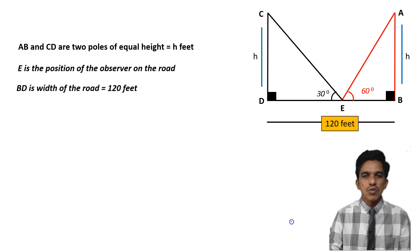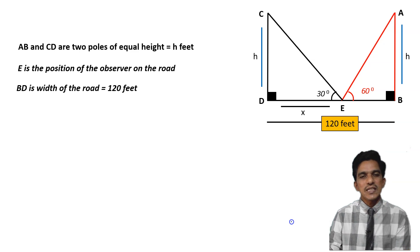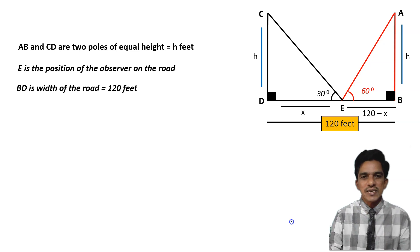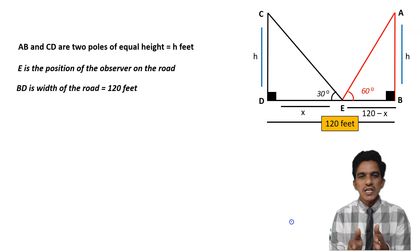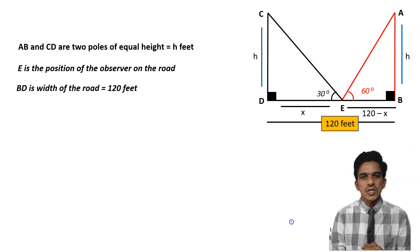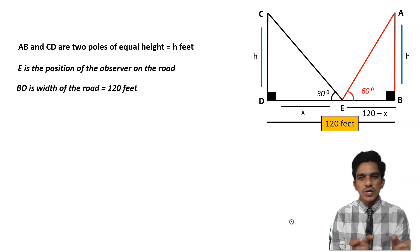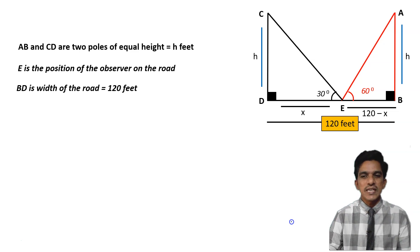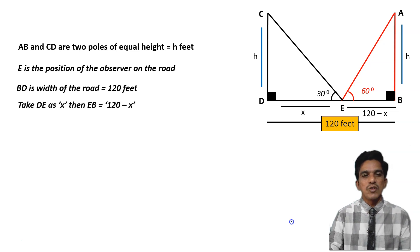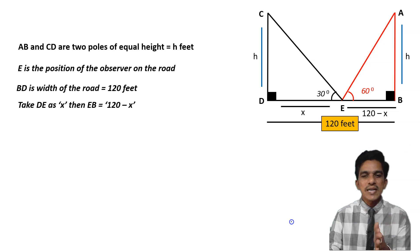B, D is the width of the road, which is equal to 120 feet. Now we will take the value of DE as X, so that EB will be 120 minus X. For example, if D is 30 meters distance, automatically E is 90 meters distance. So if you know one distance, you can find the second distance by subtracting that from 120. First distance is X, so the second distance is automatically 120 minus X.